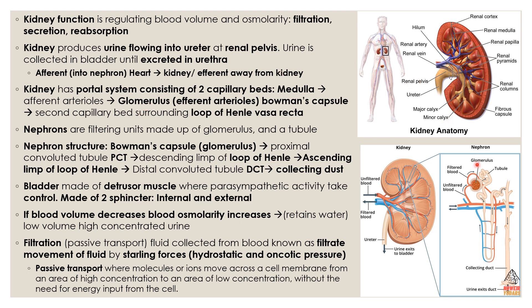You have the glomerulus here, and the glomerulus has a Bowman's capsule underneath it. The blood that recirculates goes into the efferent arteriole and then to the second capillary bed surrounding the loop of Henle — the vasa recta. There are multiple parts to the structure of a nephron which we'll discuss.